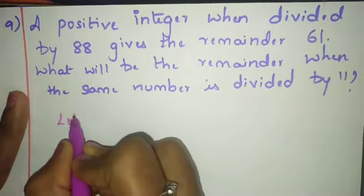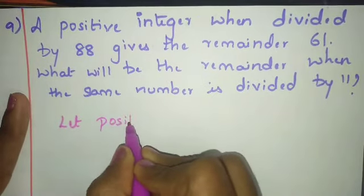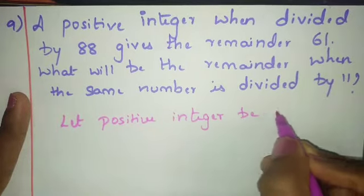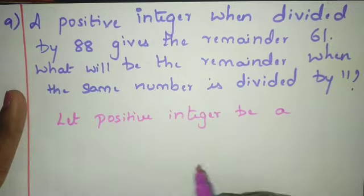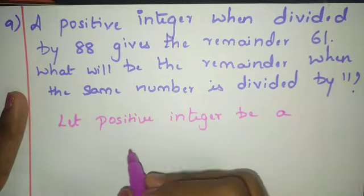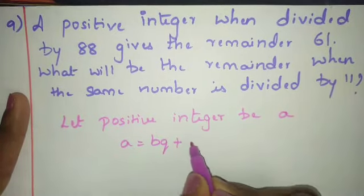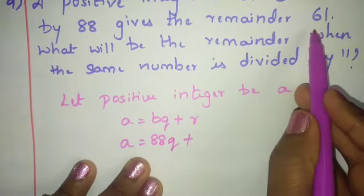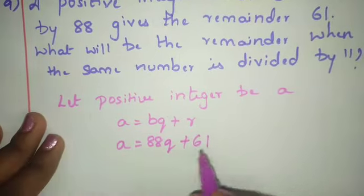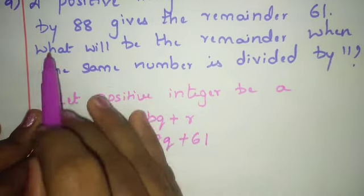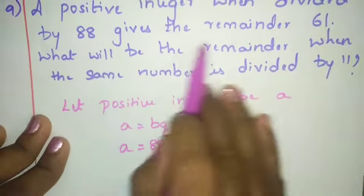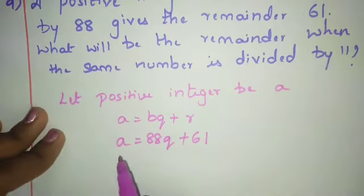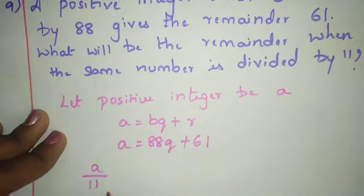Let the positive integer be a. By Euclid's division lemma: a = 88q + 61. Now find the remainder when a is divided by 11.